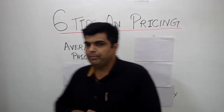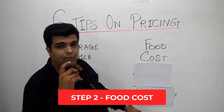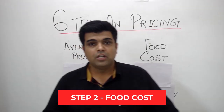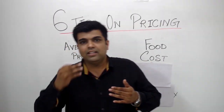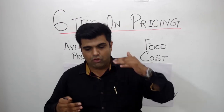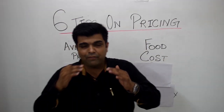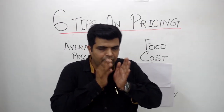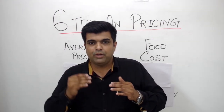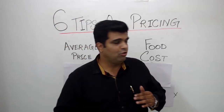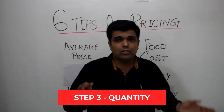The second point is food cost. You have to make sure you're not selling a dish at a price where your cost of cooking that dish is more than what you are selling it for. Always know what the food cost of a dish is so you can charge properly and appropriately — it should not be more, it should not be less.